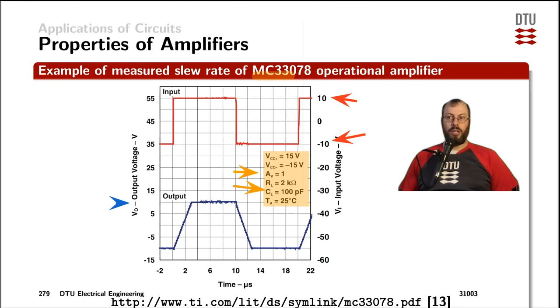As we have a voltage gain of 1, the output voltage, which is referred to the left y-axis of the graph, is also swinging between minus 10 volts and plus 10 volts.